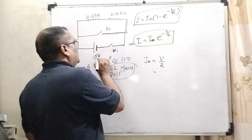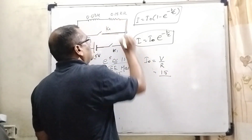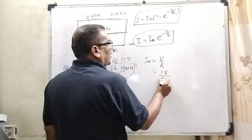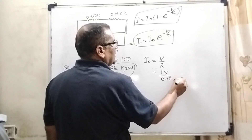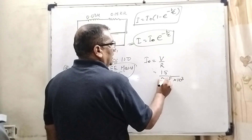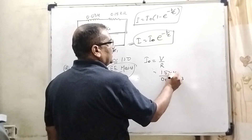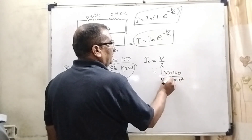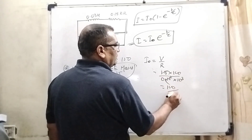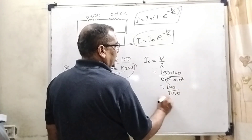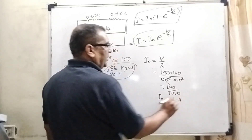I₀ equals V upon R. What is V? That is 15 volt. And what is R? That is 0.15 kilo ohm, where kilo means 10 to the power 3. Removing the decimal — that is 150 ohm — so 15 divided by 150 gives 1 by 10. So I₀ equals 1 by 10 ampere, which is 0.1 ampere.